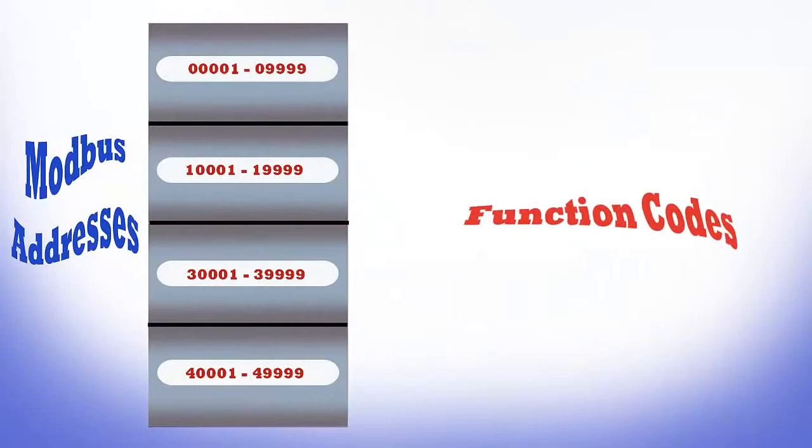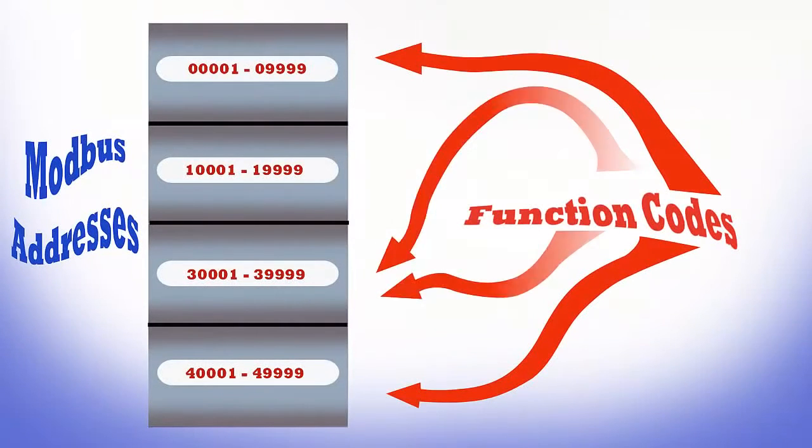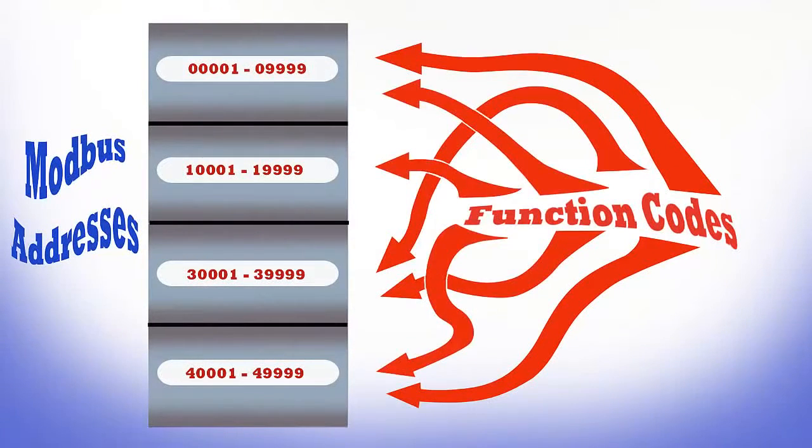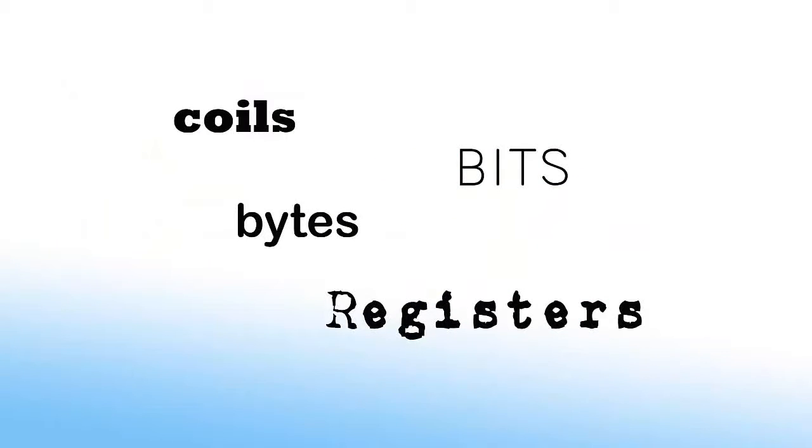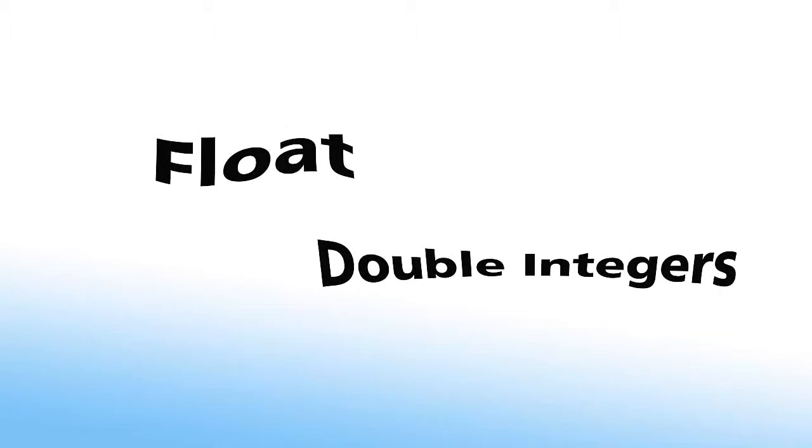We'll delve into Modbus data addressing and the associated function codes and break down coils, bits, bytes, and registers. We'll also talk about float and double integer values and how they're handled by Modbus.